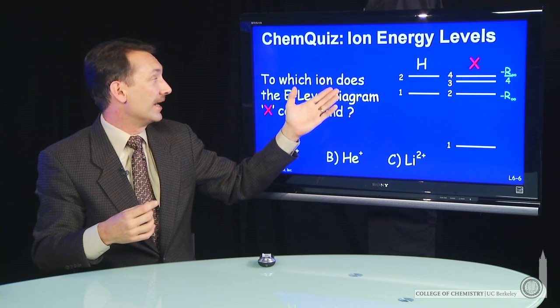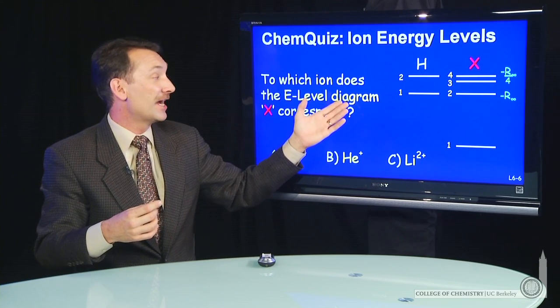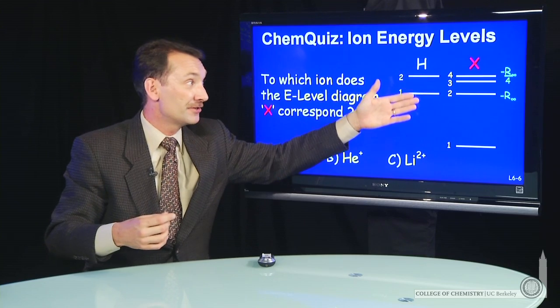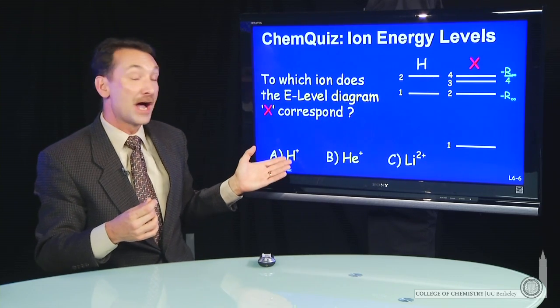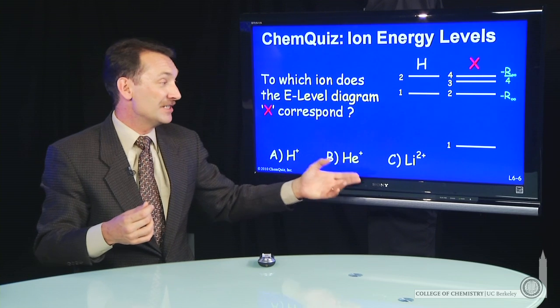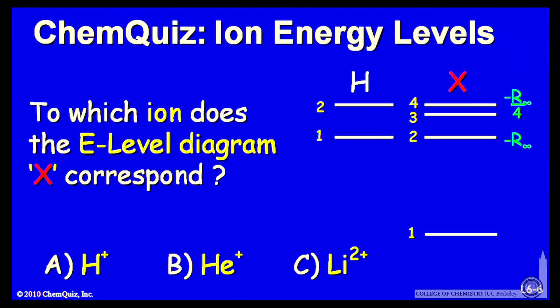Which ion does the energy level diagram X correspond to? Here's hydrogen, and near it some unknown ion X. Is that unknown ion X: H+, He+, or Li+2? Think about that for a second and make a selection.